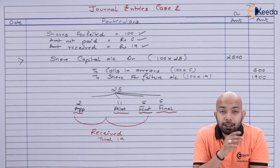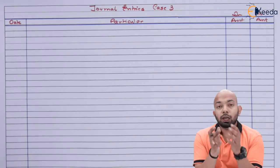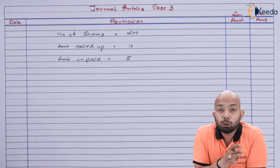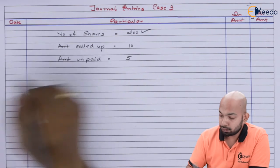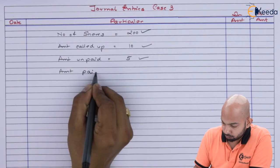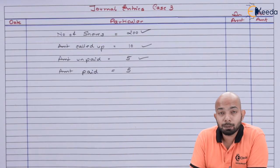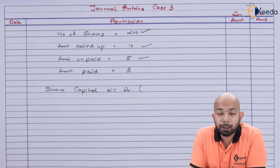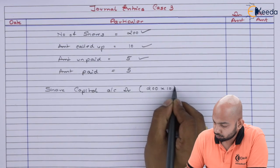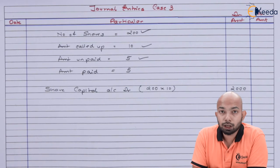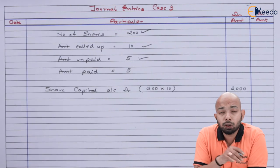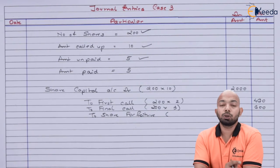Case 3 refers to Y Limited forfeiting 200 equity shares. Key details: number of shares = 200; called-up amount = ₹10; amount unpaid = ₹5 (first call ₹2 + second call ₹3); amount paid = ₹5. The entry is: Share Capital Account Dr. 200 × ₹10 = ₹2,000, to Calls in Arrears (first call and final call amounts) and to Share Forfeiture Account for the ₹5 per share already received.